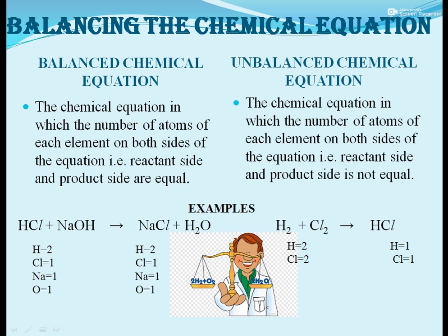Balancing the chemical equation: The law of conservation of mass states that mass of reactants equals mass of products. A balanced chemical equation is one in which the number of atoms of each element on both sides of the equation are equal. If the number of atoms on both sides is not equal, the equation is called an unbalanced or skeleton equation.